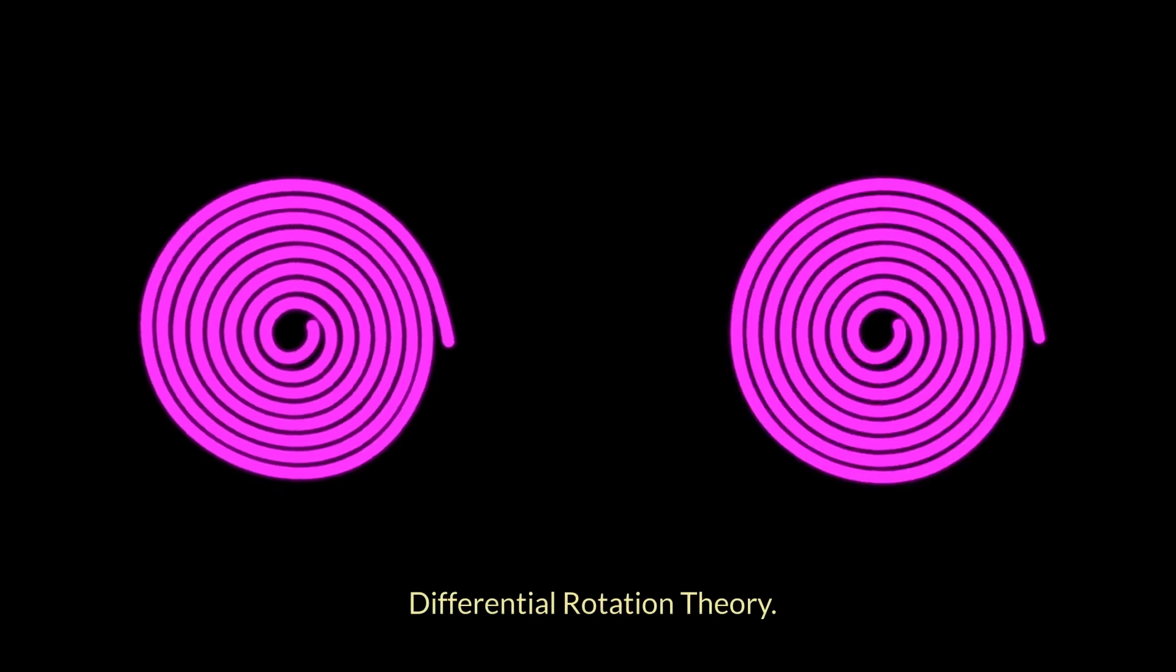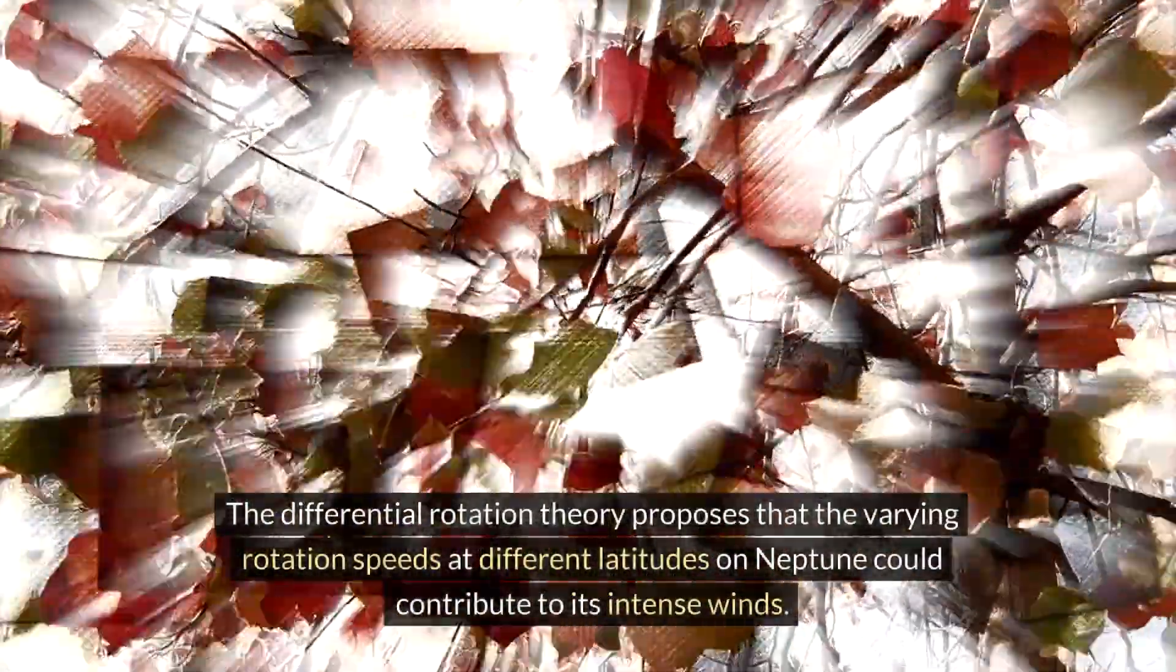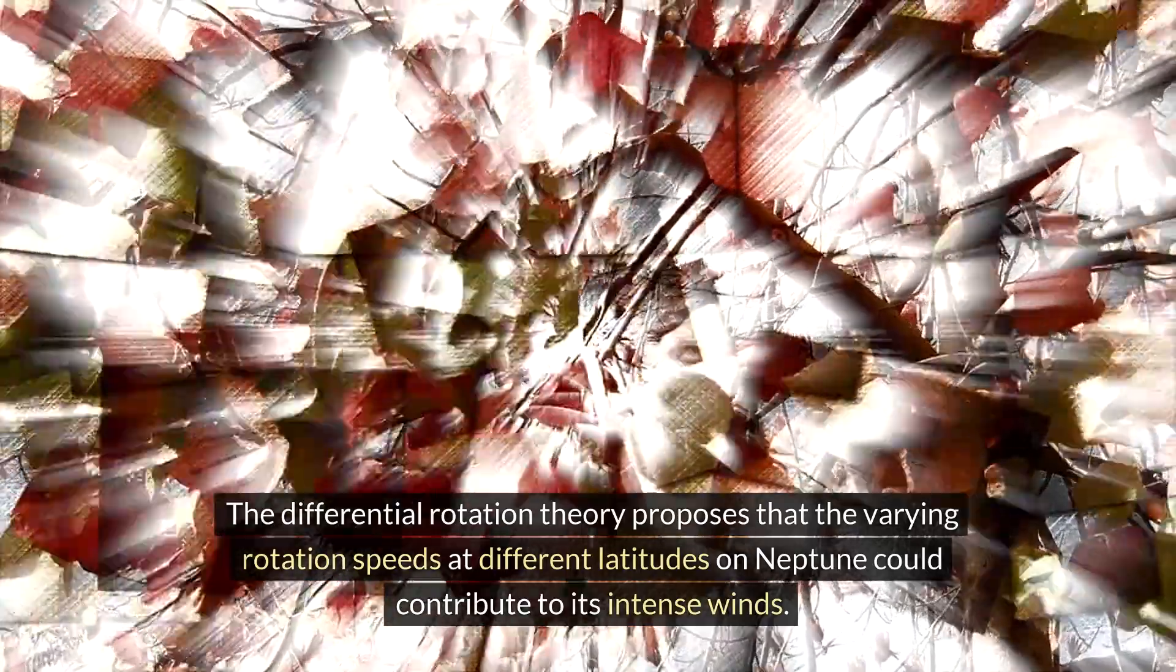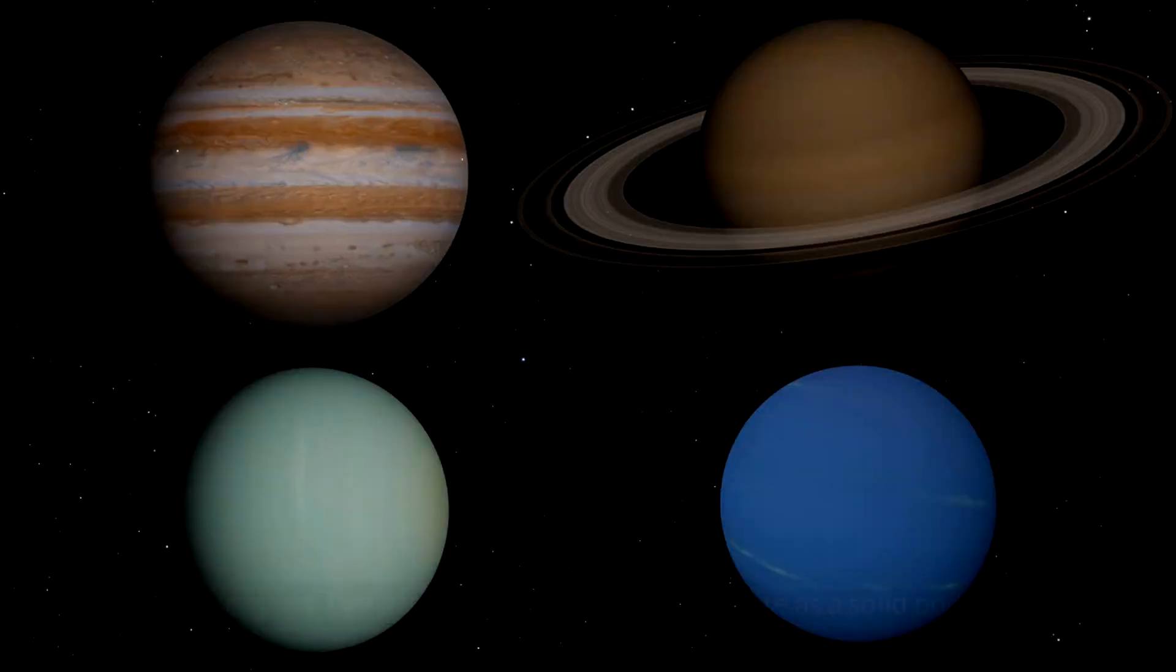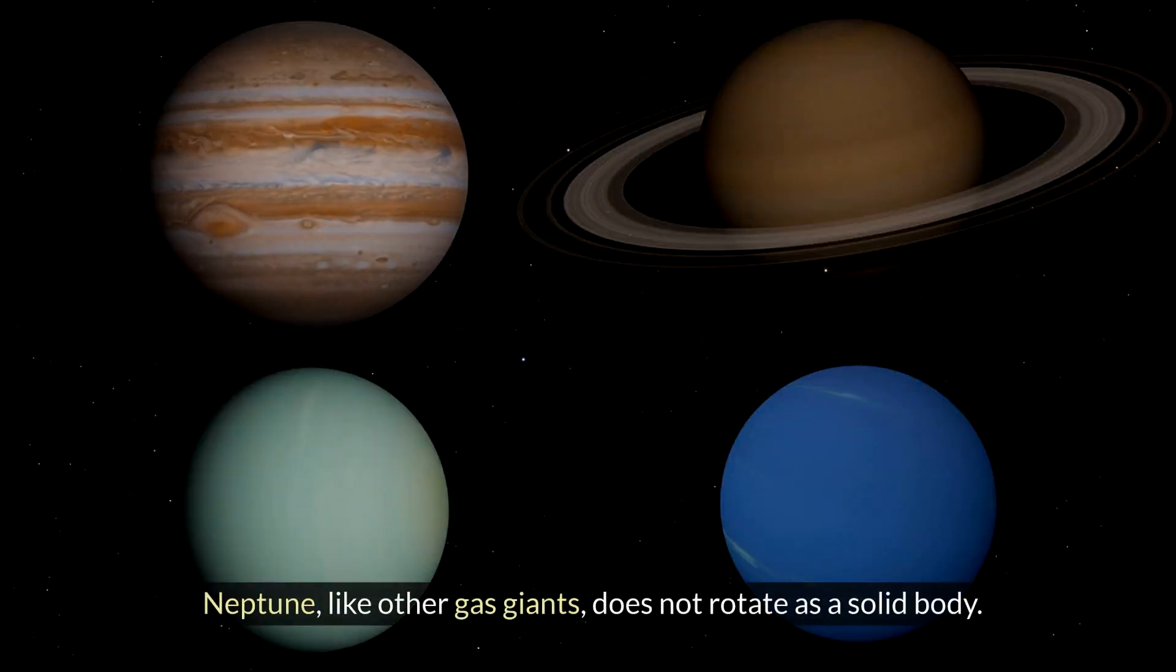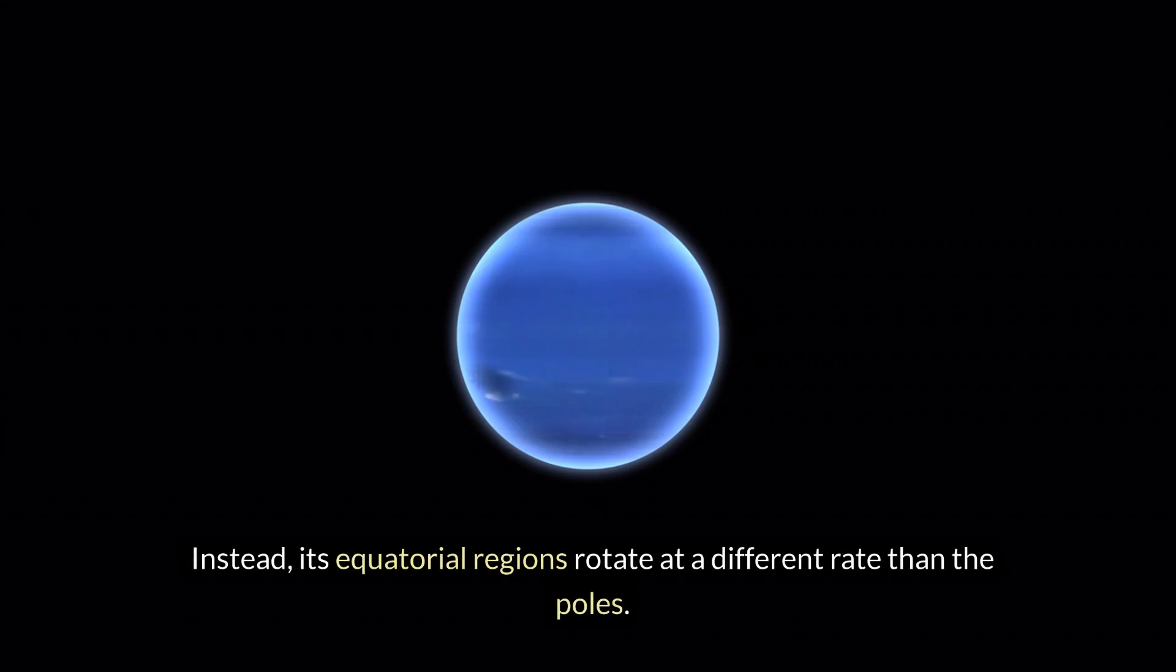Differential rotation theory: The differential rotation theory proposes that the varying rotation speeds at different latitudes on Neptune could contribute to its intense winds. Neptune, like other gas giants, does not rotate as a solid body. Instead, its equatorial regions rotate at a different rate than the poles.